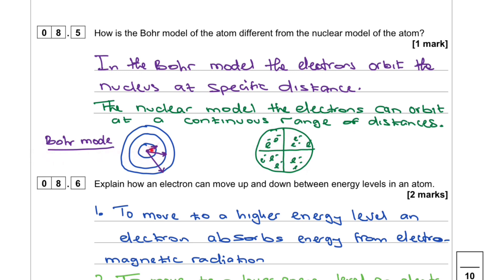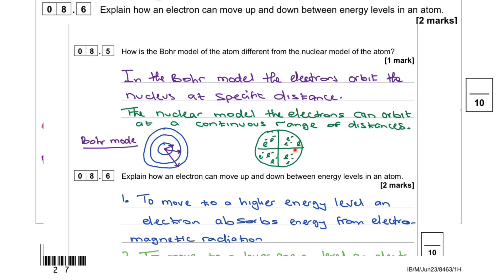So that's the Bohr model and that's the nuclear model. And that is the positive charge in the center. Just one positive charge and electrons surrounded.